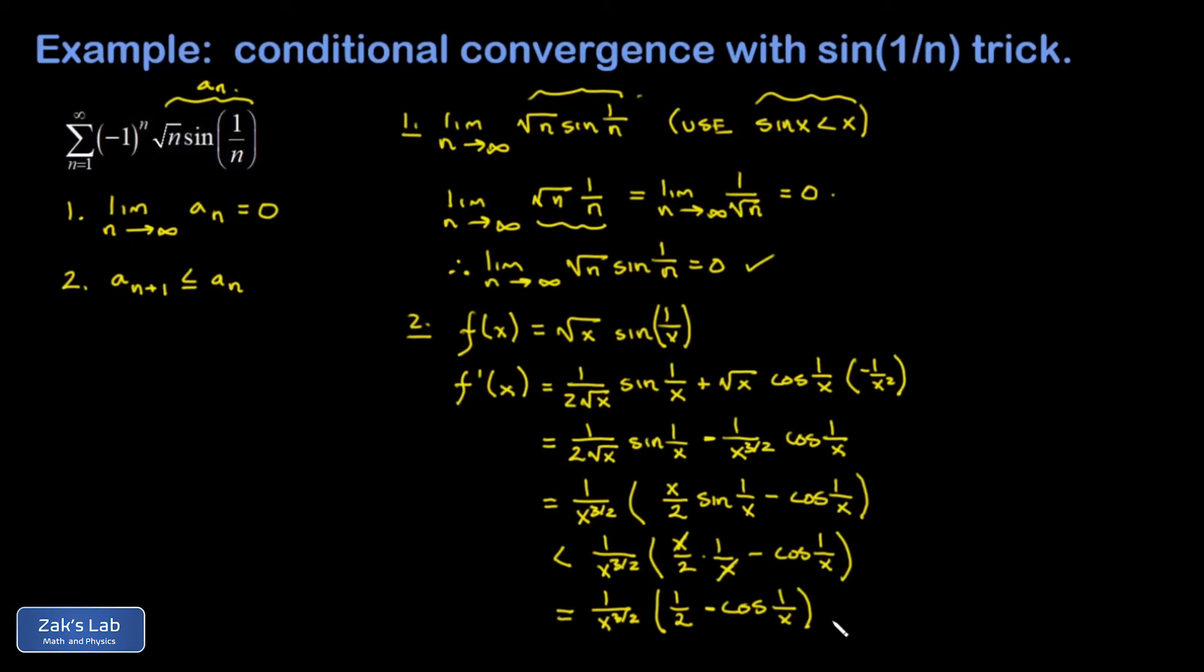The argument of the cosine function is just getting closer and closer to 0 as we generate more and more terms in our series. That means the cosine function is getting closer and closer to 1. So our 1 half minus the cosine 1 over x is a negative number, and we've shown that the derivative of our function f of x is less than 0.